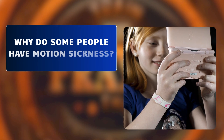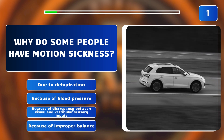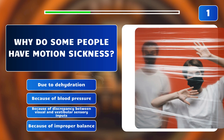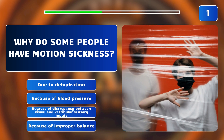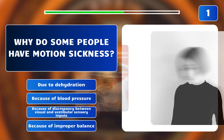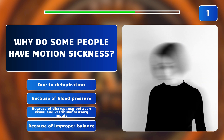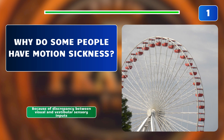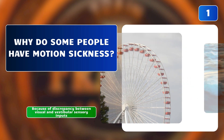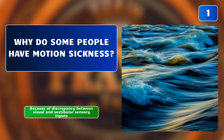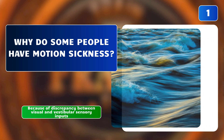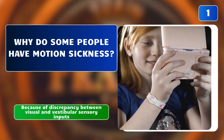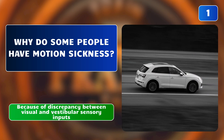Why do some people have motion sickness? Due to dehydration? Because of blood pressure? Because of discrepancy between visual and vestibular sensory inputs? Or because of improper balance? The correct answer is: because of discrepancy between visual and vestibular sensory inputs. Motion sickness occurs when there's a discrepancy between visual and vestibular inner ear sensory inputs during movement, leading to nausea and dizziness.